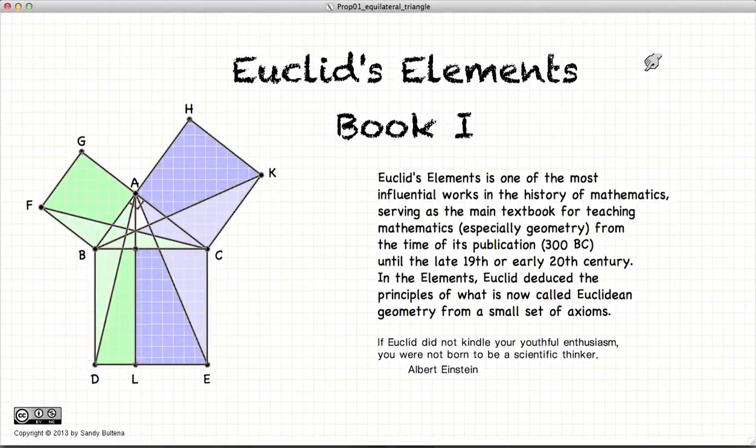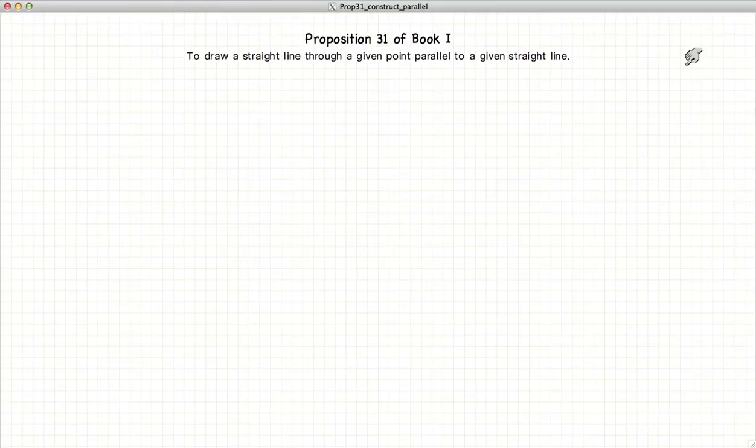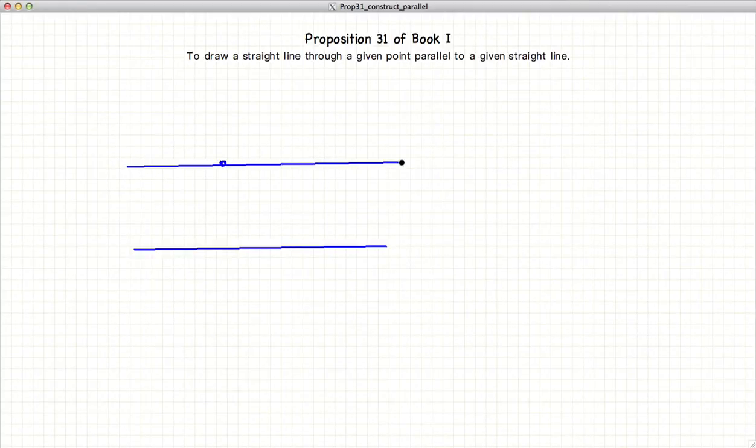Hi and welcome to my tutorials on Euclid's Elements book 1. This video presentation is going to be on proposition 31 of book 1, which states that if we have a given line and a point not on that line, it is possible to draw through this point another line so that the two lines are parallel to each other.